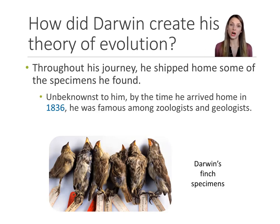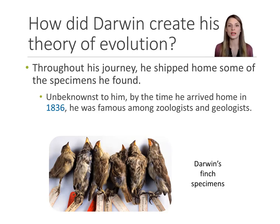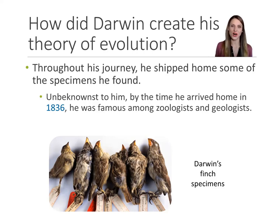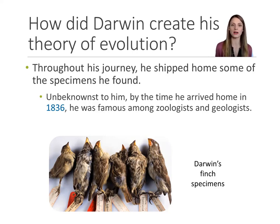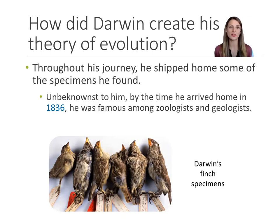While he was gone, he became uber famous. So famous that by the time he returned in 1836, every zoologist, botanist, geologist, and geographer knew who Charles Darwin was. He had no idea — when he stepped off the boat in England, he had no idea that everyone knew who he was because he had been away in South America. But those specimens that he shipped home helped make him famous before he even returned.